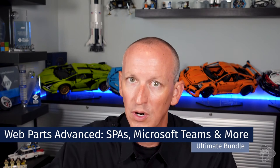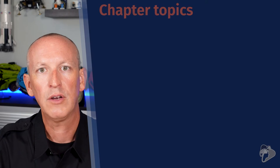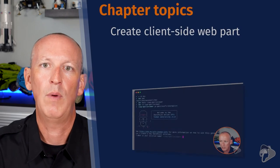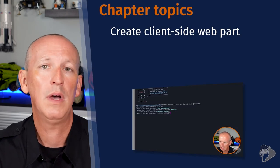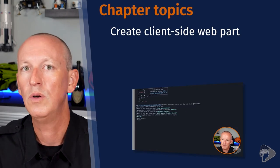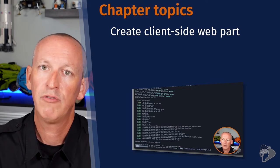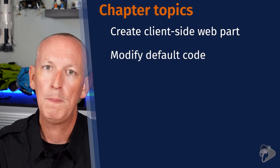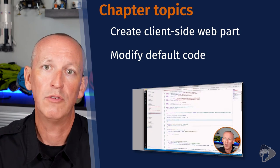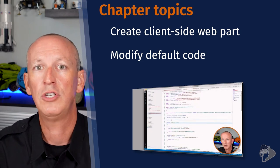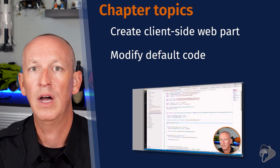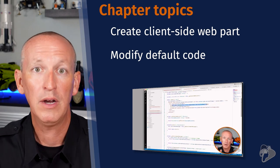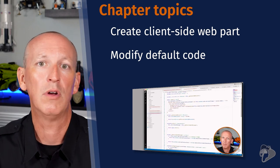But in this chapter, we're going to focus on building your first client-side web part. Not only are you going to learn how to create a client-side web part, but we will cover some of the common things you're going to run into when creating these web parts. For instance, you're going to see how to modify the default code that's provided for you, and you're going to see when your changes are running in a live web part. From there, you can implement your own custom logic.